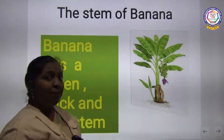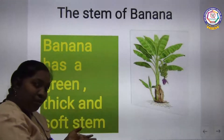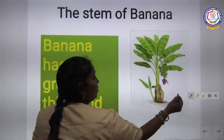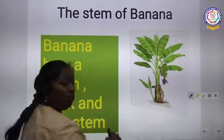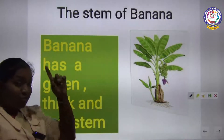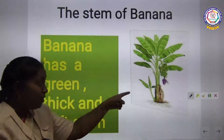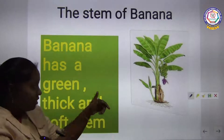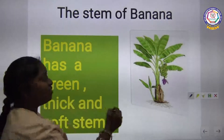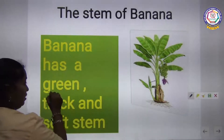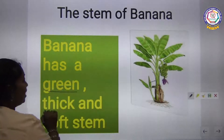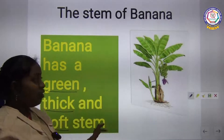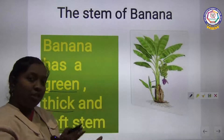Now look at this picture. The second example is a banana tree. Look at the stem part of a banana tree. What colour is it? It is green in colour. When you saw the neem tree it was brown, but now it is green. So the stem will vary. Compared to the neem tree which was very hard, the banana tree stem is green in colour, thick, and soft.